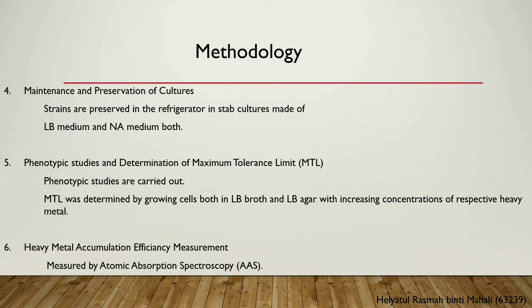The last method is heavy metal accumulation efficiency measurement. Heavy metal accumulation efficiency was measured by atomic absorption spectroscopy. The cells were suspended and then digested. Following digestion, the cell extracts were analyzed by AAS.